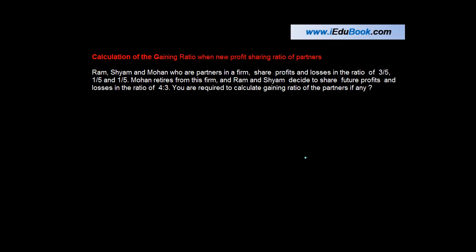Calculation of the gaining ratio when new profit sharing ratio of partners is given. Ram, Sham and Mohan who are partners in a firm share profits and losses in the ratio of 3:5, 1:5 and 1:5, or three-fifths, one-fifth and one-fifth. Mohan retires from this firm and Ram and Sham decide to share the future profits and losses in the ratio of 4:3. You're required to calculate the gaining ratio of the partners if any.